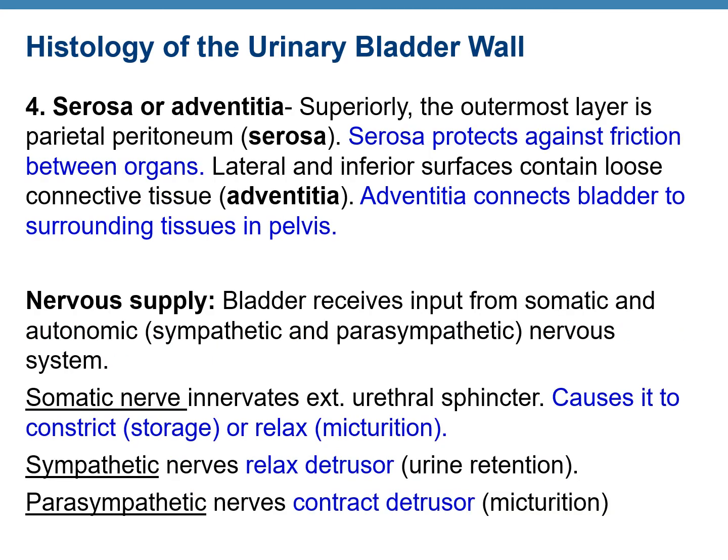Continuing with the histology of the urinary bladder wall: the fourth layer is serosa or adventitia. The superior part of the urinary bladder is covered by the parietal peritoneum, a serous membrane, which is the outermost layer in the superior part. The function of the serosa is to protect against friction with surrounding organs. The lateral and inferior walls do not contain serosa; instead they contain loose connective tissue known as adventitia, which connects the urinary bladder to surrounding tissues in the pelvis.